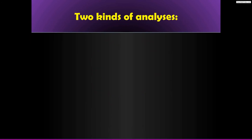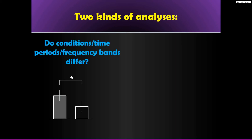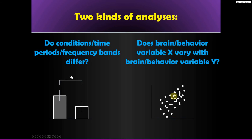I mentioned in the previous lecture that there are, very broadly speaking, two kinds of analyses you'll do: you want to look for discrete differences — are these two conditions different, or is the activity in these two frequency bands different — or a more continuous measure like a correlation. For the rest of this lecture, I'm only going to be talking about the discrete situation where you're asking whether the activity is different from condition A compared to condition B, or in our case, electrode A compared to electrode B. The same principles are also applicable to the continuous situation.